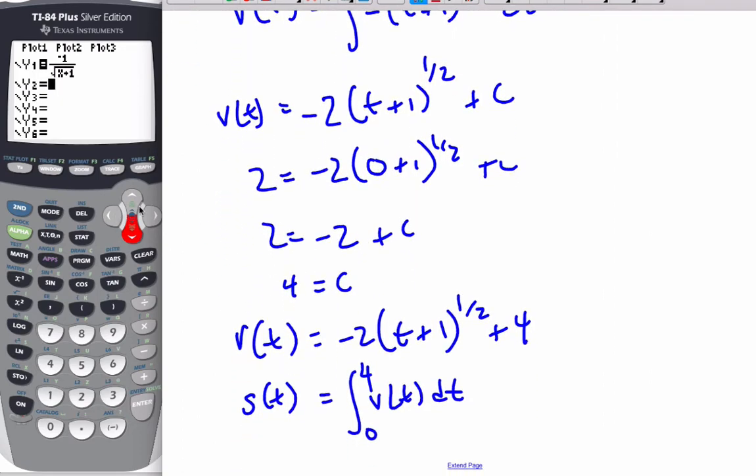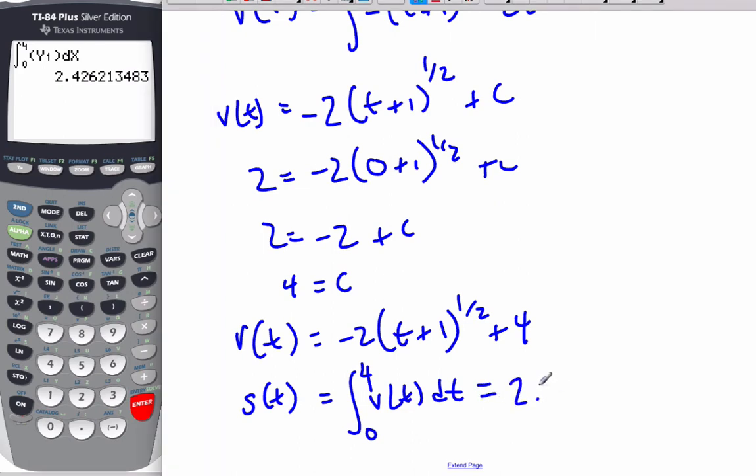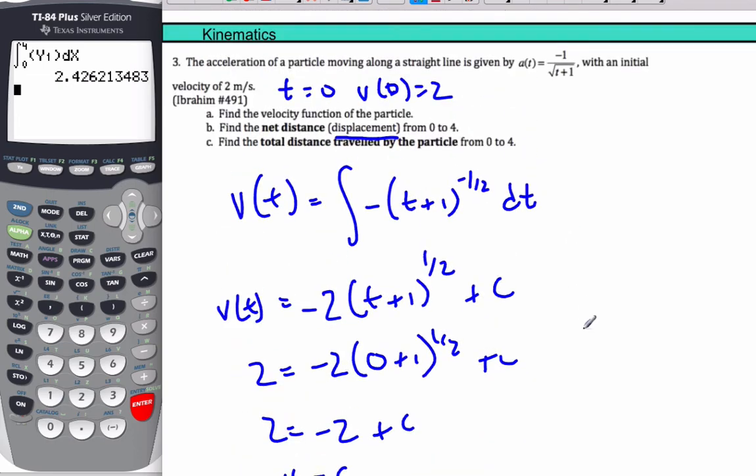So if I go to my calculator here, I'm going to put my velocity function in here as negative two times x plus one to the power of 0.5 plus four, that's my velocity function. I'm going to go math, number nine is integrate from zero to four, and I want to integrate y one with respect to x. And so when I take the integral, I know that the displacement is 2.43 meters.